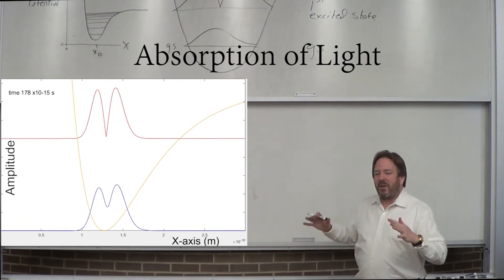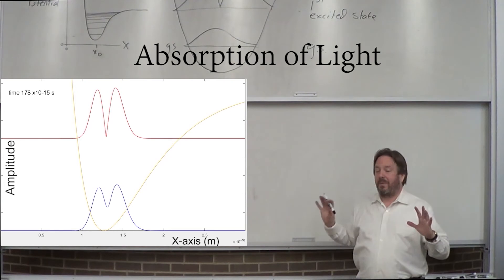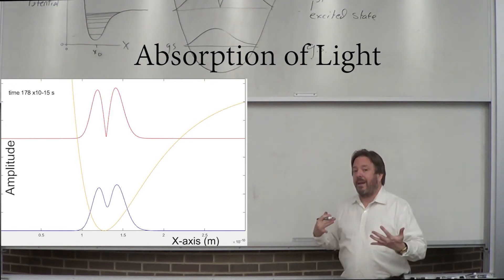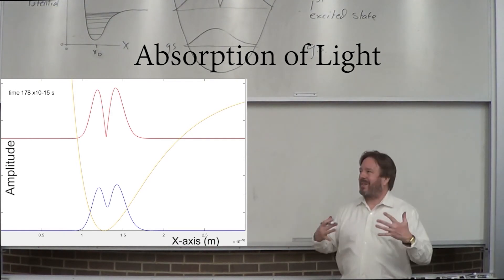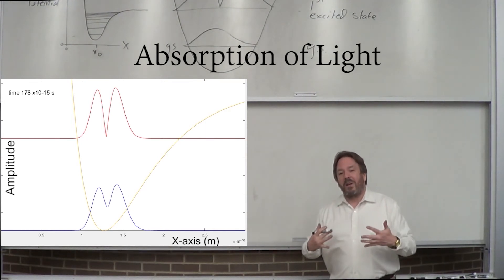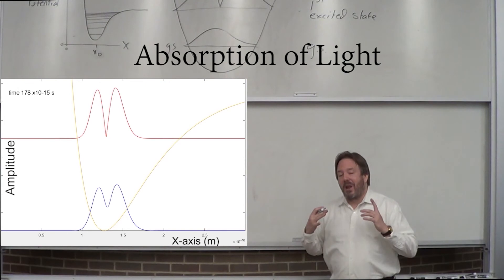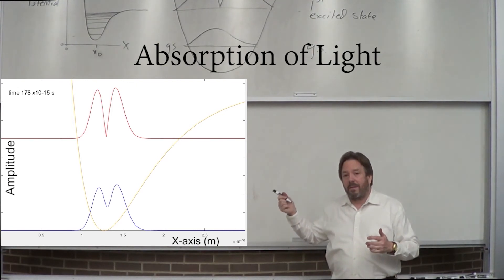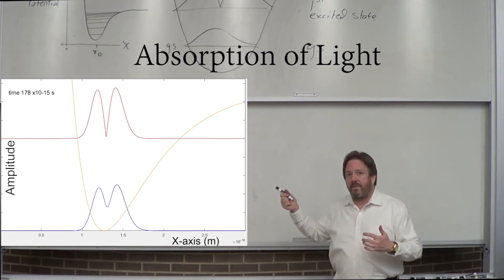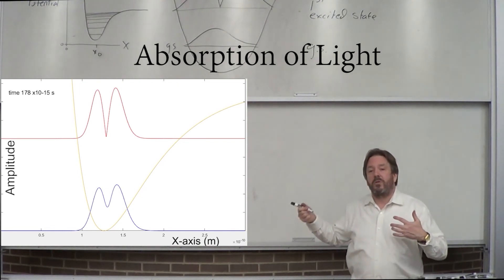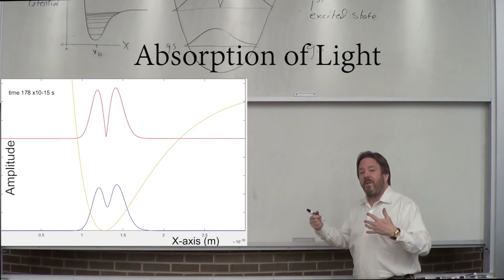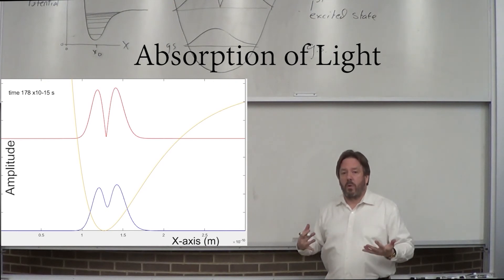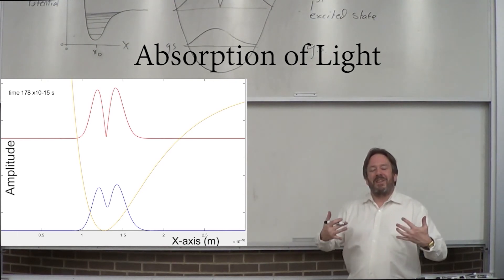What you get out of this is some of the things that are almost never taught in a P-Chem class. What I wanted to show you is that absorption of light is not instantaneous. You may have noticed I was keeping track of time in the upper left — that simulation was about 150 femtoseconds. It took 150 femtoseconds — 10 to the minus 15 seconds — for this thing to absorb light. Absorption of light is not instantaneous.